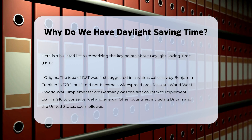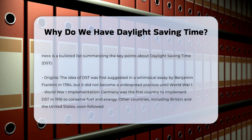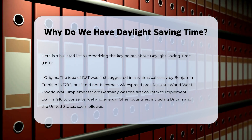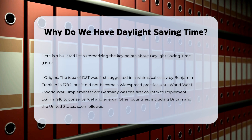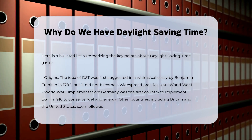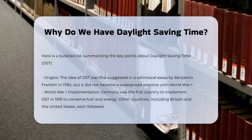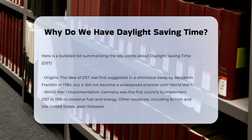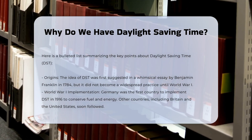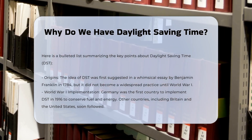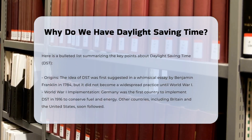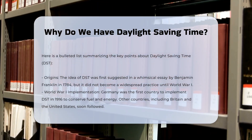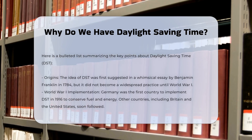The idea of DST was first suggested in a whimsical essay by Benjamin Franklin in 1784, but it didn't become a widespread practice until World War I. During this time, countries like Germany, Britain, and the United States adopted DST as a way to conserve energy by reducing the need for artificial lighting.